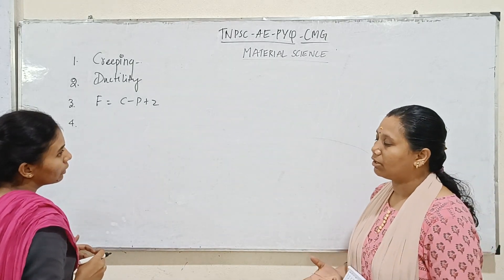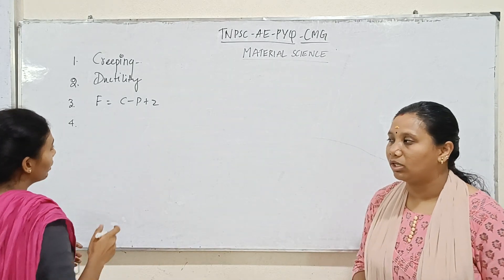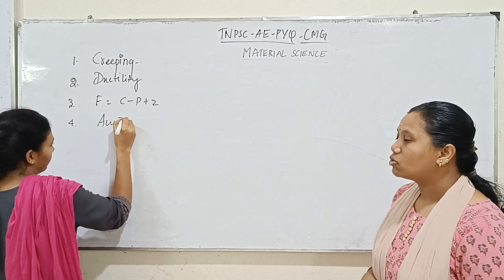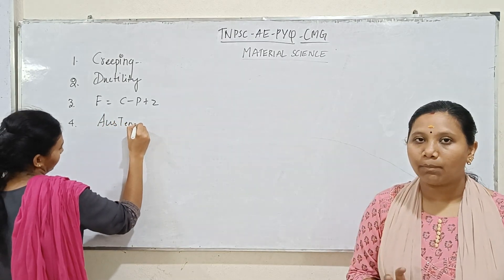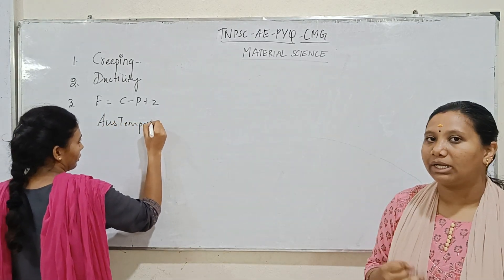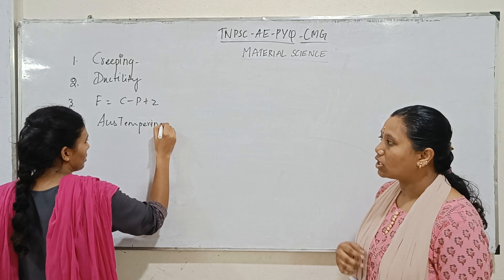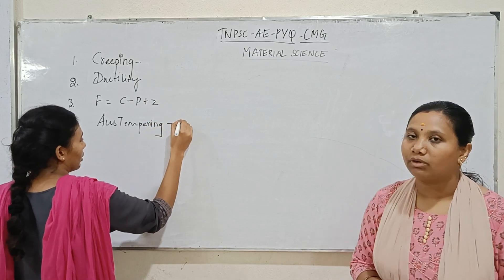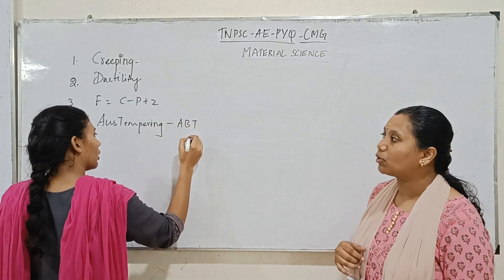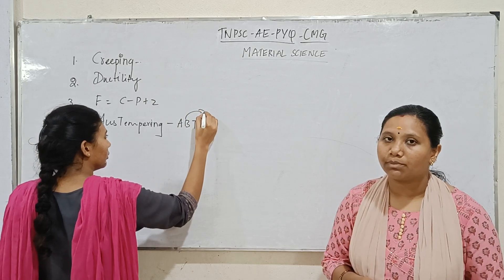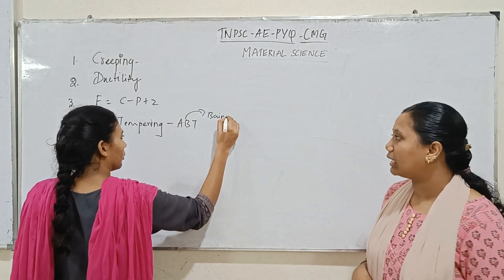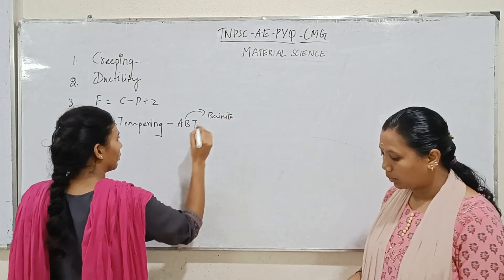Steel receives toughness through the process of austempering. Austempering results in a bainite structure — B for bainite, T for toughness. So austempering gives toughness and results in a bainite structure.